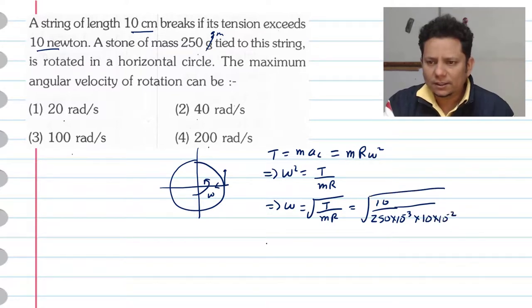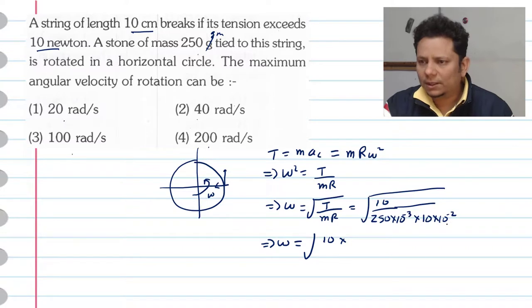All right? Now when we solve it, this will be equal to omega will be equal to 10 multiplied by 10 to the power 4 divided by 250. So this will be equal to 10 to the power 4 divided by 25.